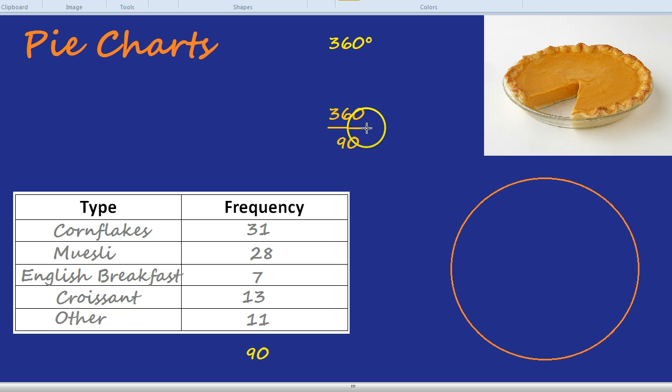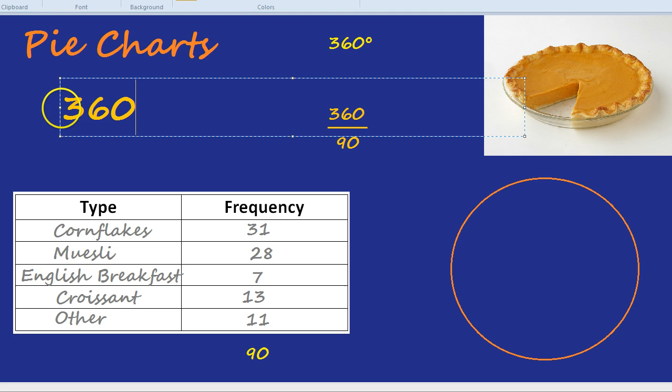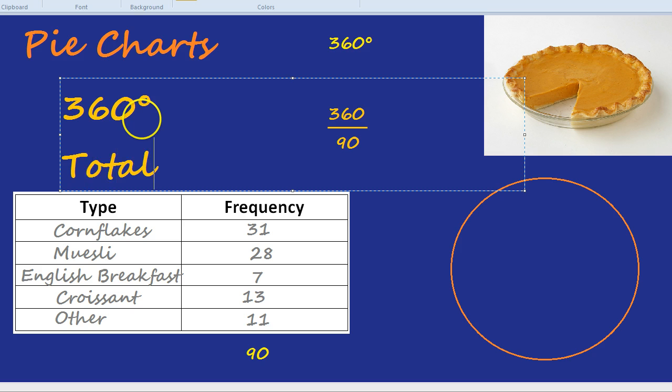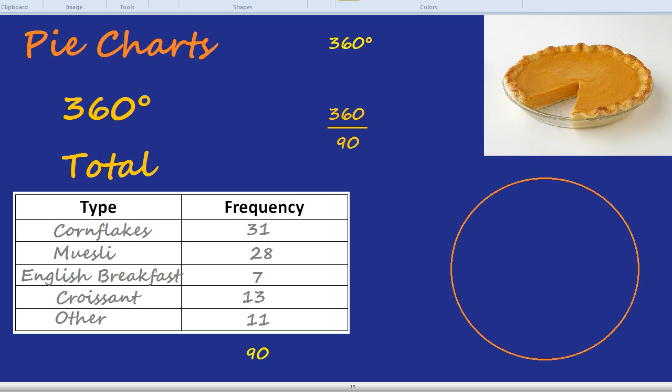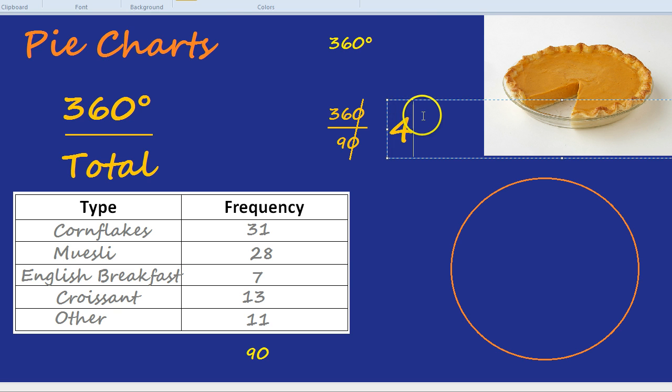What you need to do in pie charts is always, and this is really quite important, you always do 360 degrees divided by the total, as in the total of all the frequencies. And you'll see in a moment why we do that. 360 divided by 90, if you're not sure you can knock off the zeros, and that's 36 divided by 9, which is indeed 4.